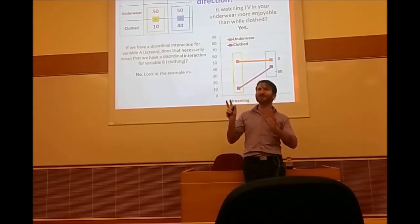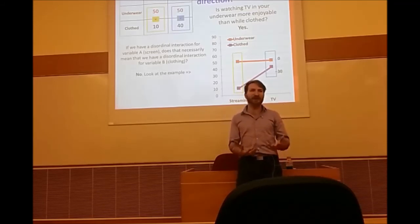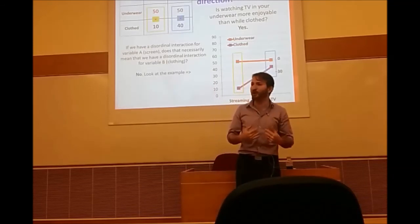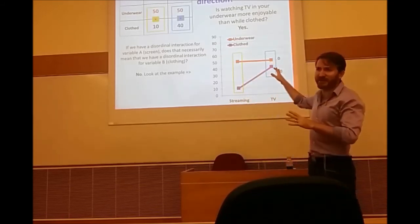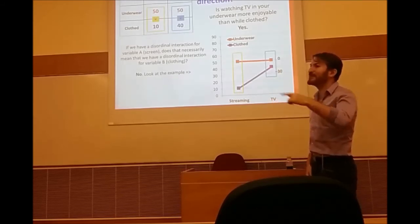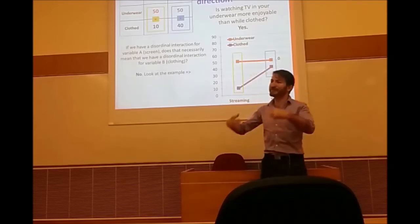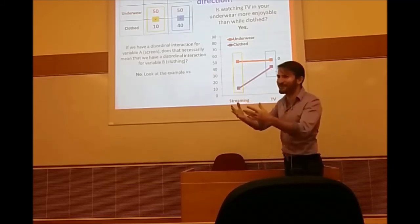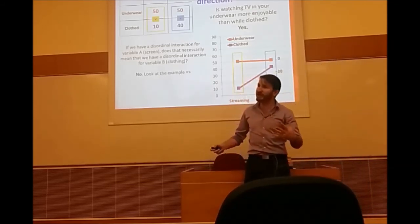A student asks about the significance of describing an interaction from one angle versus the other. It tells a different story — the question is whether the main effects are still relevant. An ordinal interaction keeps the meaning of the main effect. A disordinal interaction does not. The data tells a complex story, and we need to understand it from all angles. In most papers, the study will describe the interaction from the angle the researcher was most interested in.